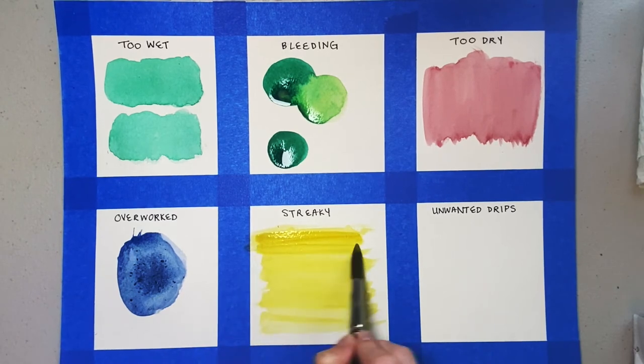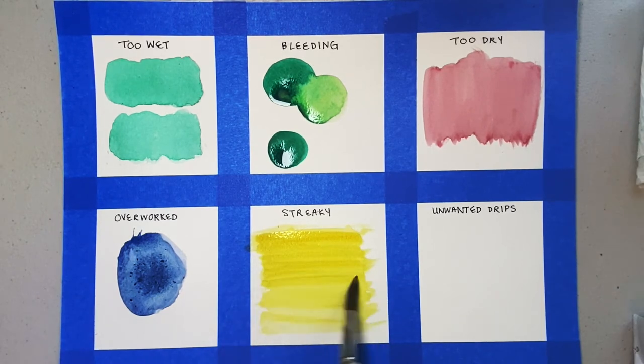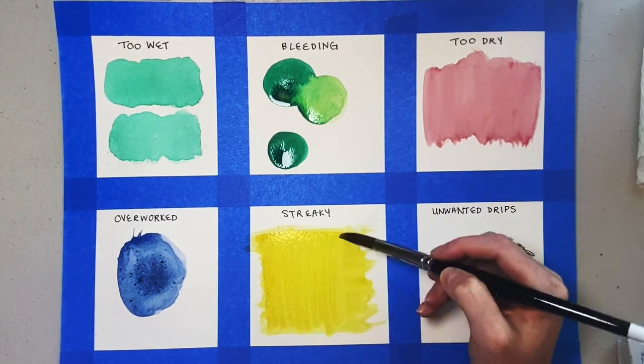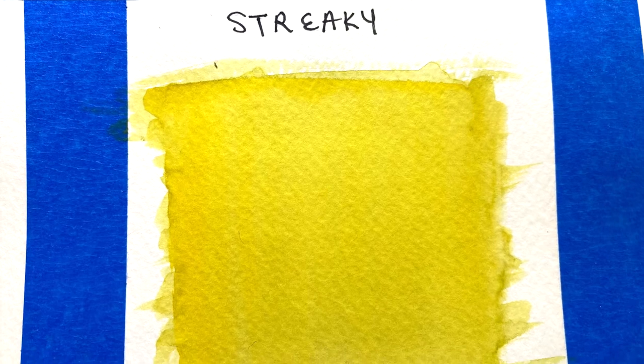You can fix this by going back over the streaks with another wash or brush in the opposite direction of your first wash. When the paint dries, it will be nice and even.